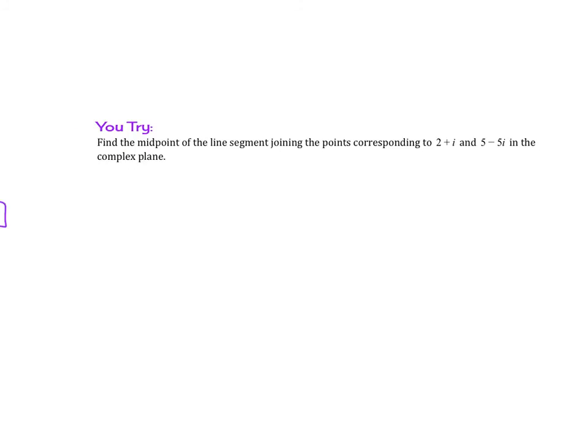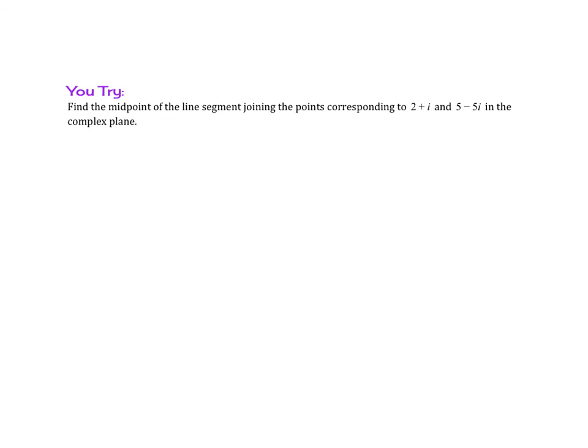Try this example. Find the midpoint of the line segment joining the points corresponding to 2 plus i and 5 minus 5i in the complex plane. In this one, you should have found that the answer was 7 halves and negative 2.